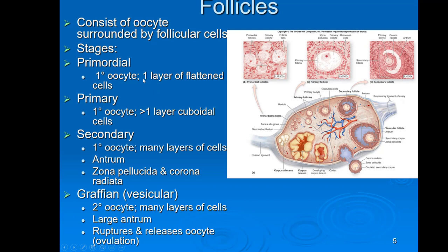Starting with the primordial follicle: this is the most immature type, has an oocyte known as a primary oocyte, and is surrounded by one layer of flattened cells. That's a primordial follicle. It will progress into a primary follicle, which still contains a primary oocyte. The only difference is it's gotten a little bit bigger and the flat cells have turned into more cuboidal cells.